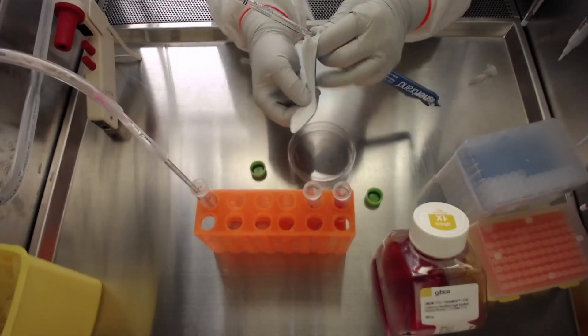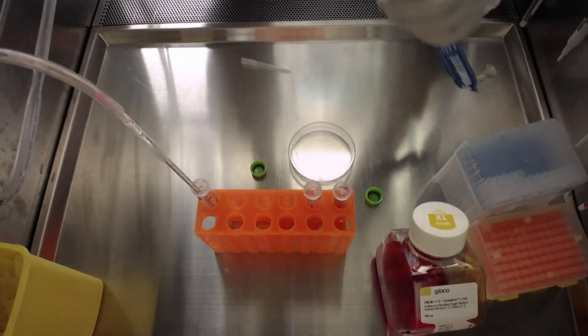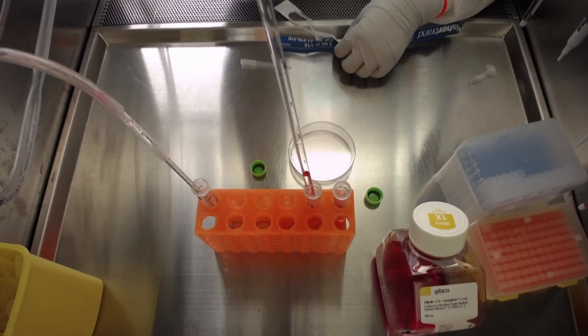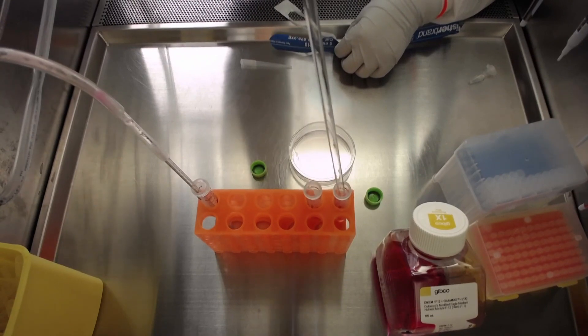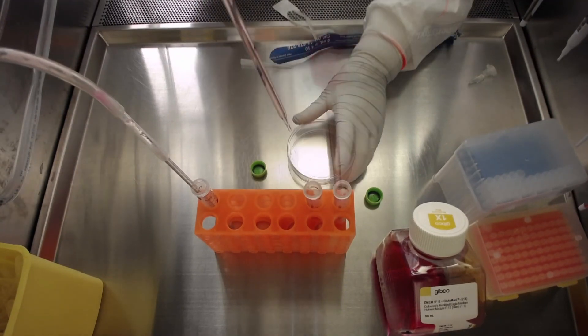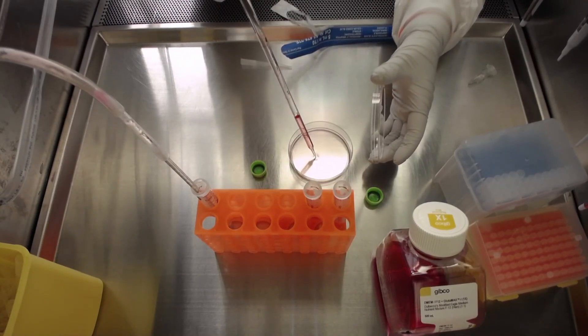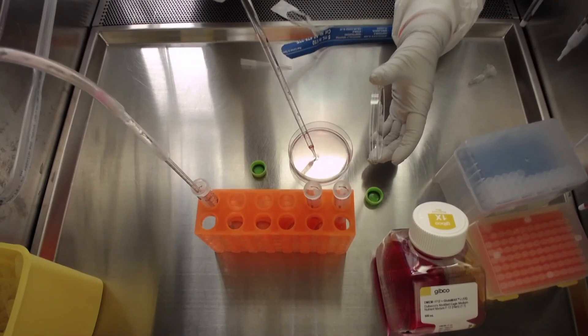With a serological pipette, take 2 milliliters of media with rock inhibitor and slowly add it to the tube containing the cells. Take the remaining 6 milliliters of the media with rock inhibitor and add it directly to the dish. This is important to avoid the dish from drying up.